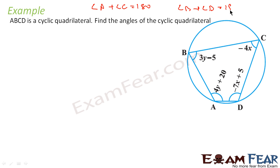Let's use this property. Angle A plus angle C is nothing but 4y plus 20 plus minus 4x, which equals 180. That is my first equation. The second equation is angle B plus angle D, that is 3y minus 5 plus minus 7x plus 5 equals 180.